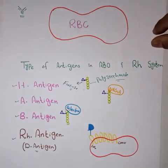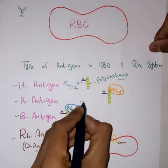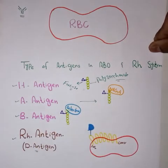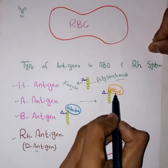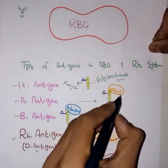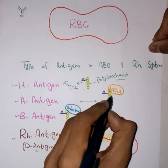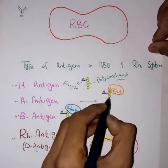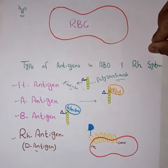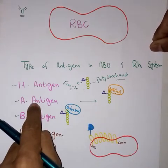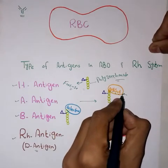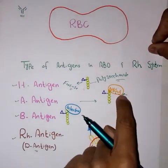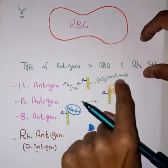Now, what is A antigen? In A antigen, along with the H antigen, another sugar moiety — N-acetylgalactosamine (NAGA) — is attached or present over this polysaccharide. This complex of sugars will be called A antigen. So H antigen plus NAGA — if N-acetylgalactosamine is present on the H antigen, it will now be called A antigen.